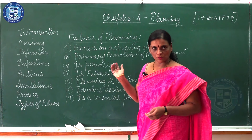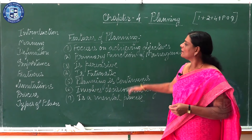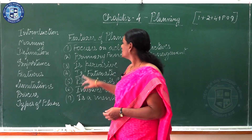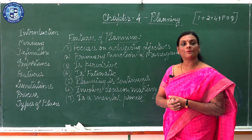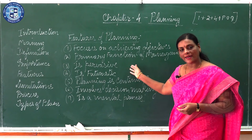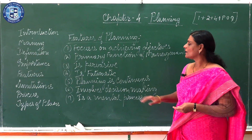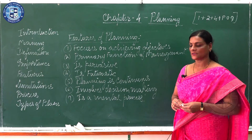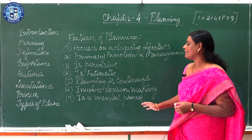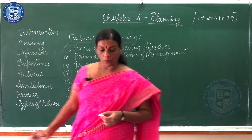Now let us move on to the next model, that is features of planning. I have listed out the points here. The first one being planning focuses on achieving objectives, second one being planning is the primary function of management, third one being planning is pervasive, fourth one being planning is futuristic, fifth one planning is continuous, sixth one planning involves decision-making, and the seventh one being planning is a mental process.